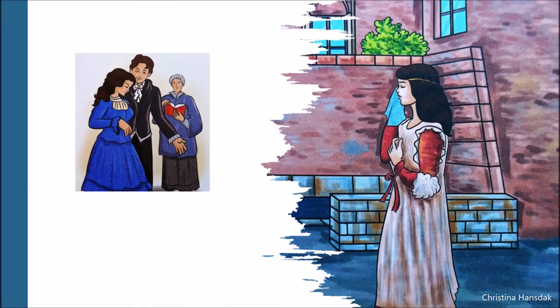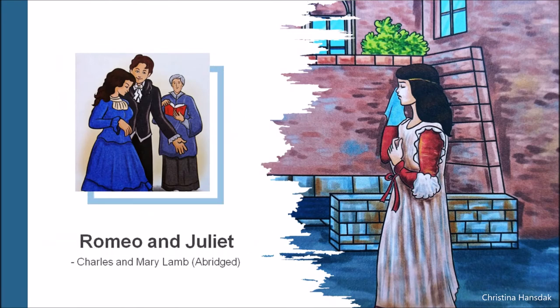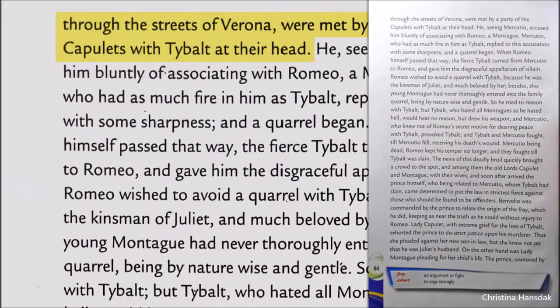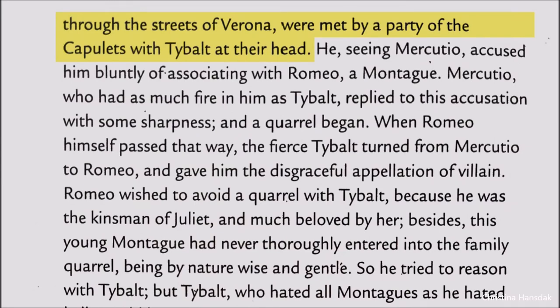Welcome back to the lesson, Romeo and Juliet, abridged by Charles Lamb and Mary Lamb. Benvolio and Mercutio were walking through the streets of Verona when they were met accidentally by Tybalt, who was the head of his party. Tybalt brought up the matter of the last feast, where he had seen both of them along with Romeo. His words were thrown out like arrows, pricking those in front, and sharp voices were heard — and so the quarrel began.